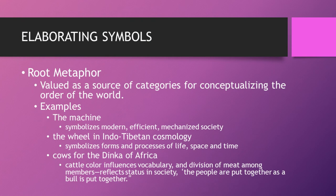Examples of elaborating symbols include the wheel in Indo-Tibetan cosmology and the cows for the Dinka in Africa. For the Dinka, cows are everything — they're the entire economy. Men dye their hair red in the urine of the cattle every morning. They drink the milk and drink the blood, and they mix the milk and blood together to make a third drink. They very seldom butcher them because they keep producing both the blood and the milk. In India, cows are so sacred you can literally buy cow urine and cow dung soap — there are entire industries using the byproducts of cattle because they can't kill them.